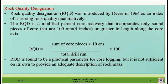RQD — Rock Quality Designation — was introduced by Deere in 1964 as an index for assessing rock quality quantitatively. RQD is a modified percent core recovery that incorporates only pieces of core that are 100 mm (4 inches) or greater in length along the core axis. The formula used to find RQD is: RQD equals the sum of core pieces greater than or equal to 10 centimeters,